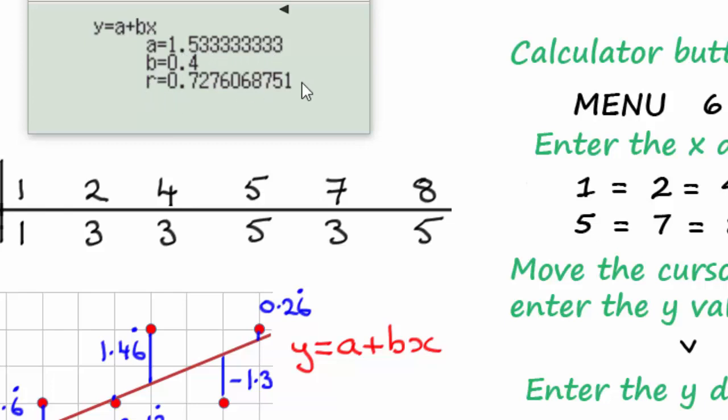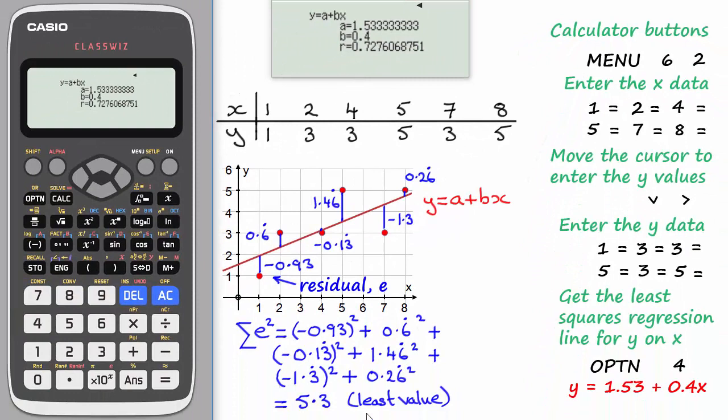We'll ignore this value for r. I'll be talking to you about that in a later tutorial. All we need to concern ourselves with is just the values of a and b. And you can see then that I've put them in here. Although I haven't written 1.53 recurring, I've just cut it off to two decimal places at 1.53.